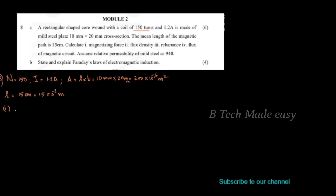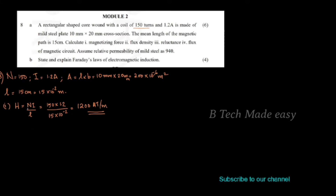We have to find the magnetizing force H. The magnetizing force equation is H equals NI divided by L. Substituting values: H equals 150 into 1.2 divided by 15 into 10 raised to minus 2. This gives 1200 ampere-turns per meter, where ampere is current, turns is N, and meter is length.